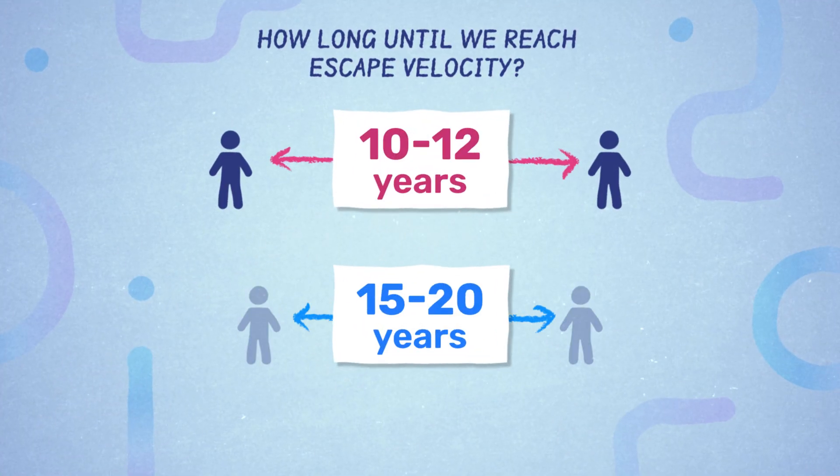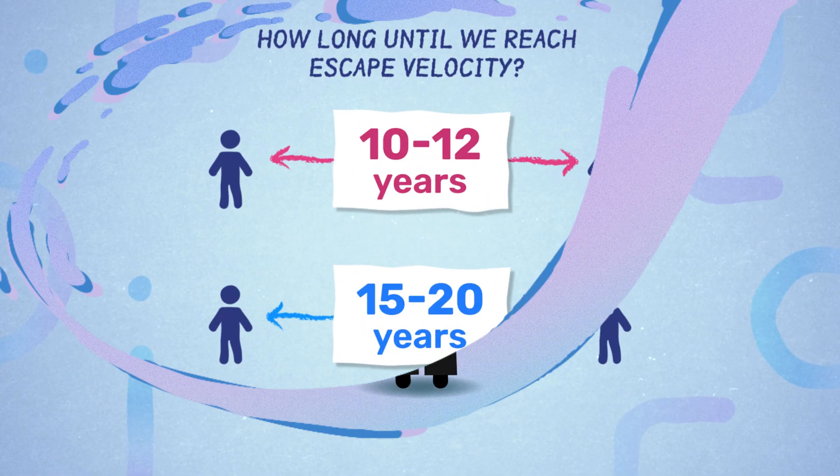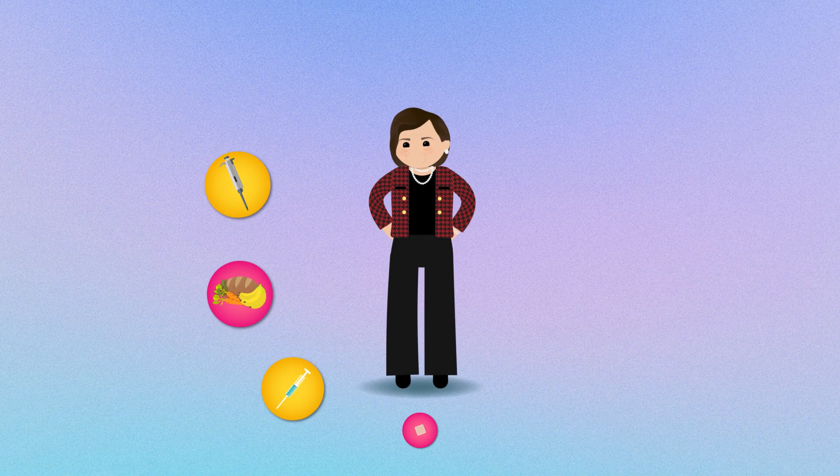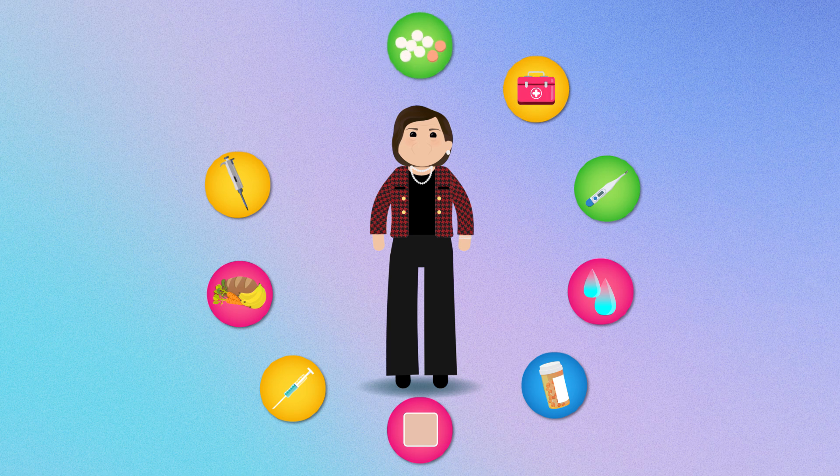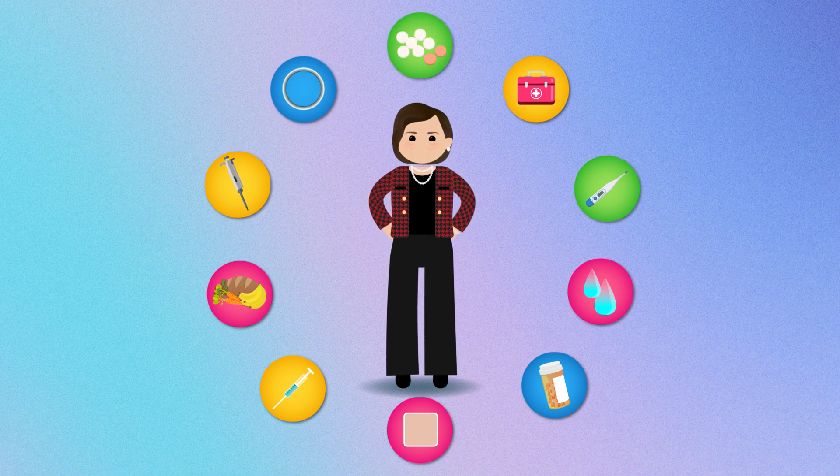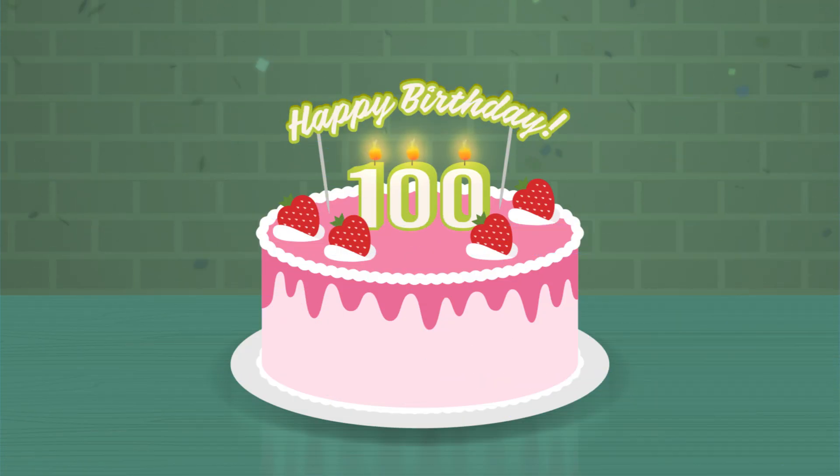Ray Kurzweil believes 10 to 12 years. George Church, 15 to 20 years. So someone who's 50 today is likely to intercept all the breakthroughs that will give them an additional 30 years at a minimum. There's no reason not to make it well past 100.